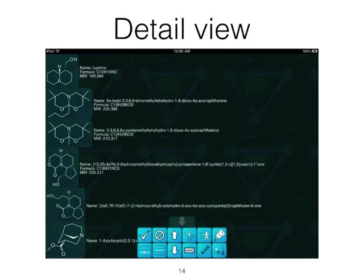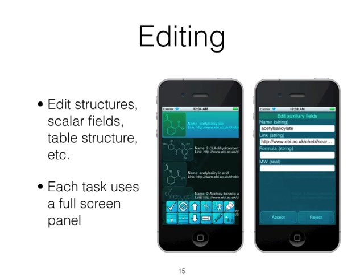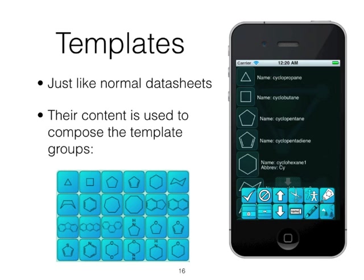This is not just for viewing — there are full editing capabilities for these data sheets. You can edit any of the structures or scalar fields, and there are manipulation tools for rows: add, insert, delete, move, and so on. You can also edit the underlying table structure and organize your columns as you see fit. The templates used for building structures are not hard-coded within the system — the template groups are just derived from individual data sheets on the mobile device. So if you modify or add to any of these, they'll immediately be reflected in your list of drawing options.